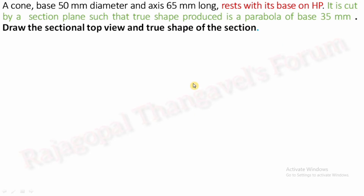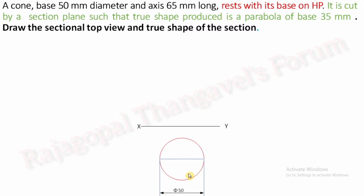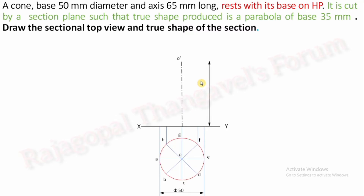After reading the question, always check what is the front and top view — not a cylinder here, it's a cone. Resting with its base on HP, our top view will be a circle and the front view will be a triangle. The diameter of the circle is 50 mm, and you can divide the circle into eight divisions giving notations A, B, C, D, E, F, G, H. Then extend perpendicular vertical projectors to complete the front view. The height of the front view axis is 65 mm.